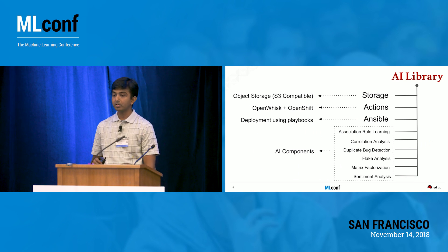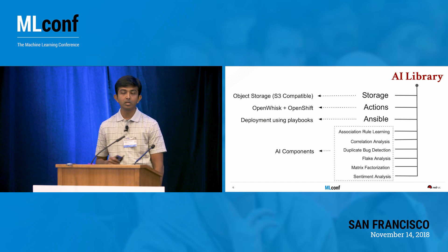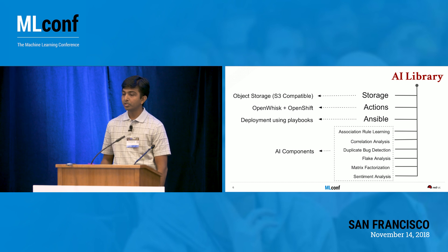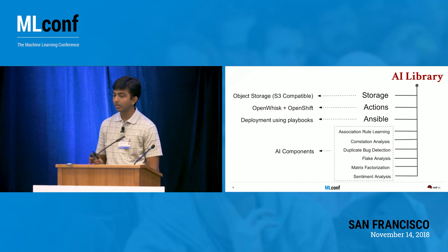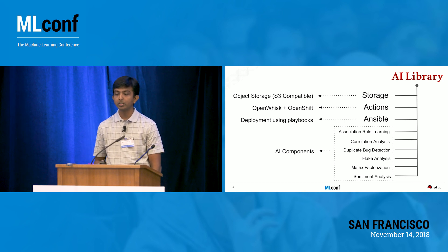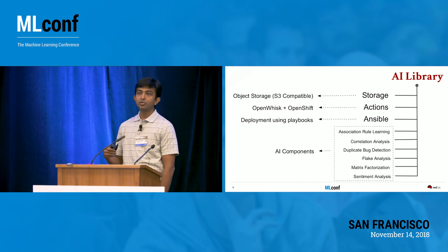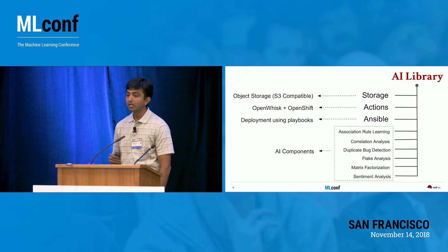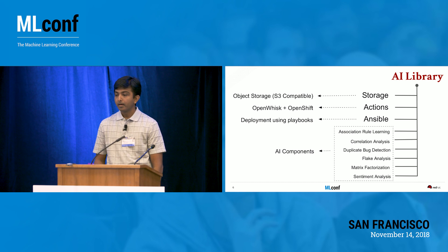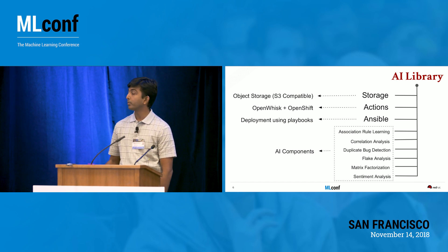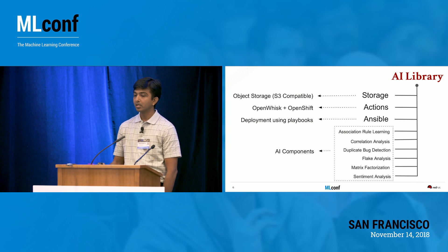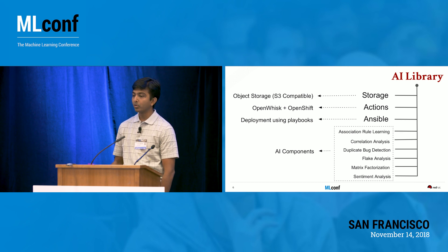The structure you'd see in our GitLab repo has storage modules that take care of S3-compatible backends. Actions point to the OpenWhisk and container application platform-related tasks that let you spin up jobs or create containers and do the machine learning magic in the background. We also have Ansible automation that takes care of bringing the whole thing up and managing it.